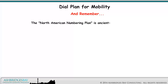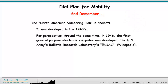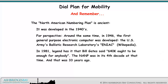Remember this: the North American Numbering Plan is ancient. It was developed in the 1940s. For perspective, around the same time in 1946, the first general-purpose electronic computer was developed — the U.S. Army's Ballistic Research Laboratory's ENIAC. In 1981, legend has it that Bill Gates said, '640k ought to be enough for anybody.' The NANP was in its fourth decade at that time, and that was 33 years ago. We can only do so much with such old technology.